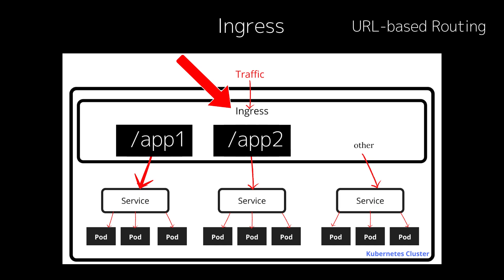For example, if a user visits /app1, the traffic can be routed to one service, while traffic to /app2 can go to another. Now let's talk about TLS termination, which is often handled by Ingress controllers.